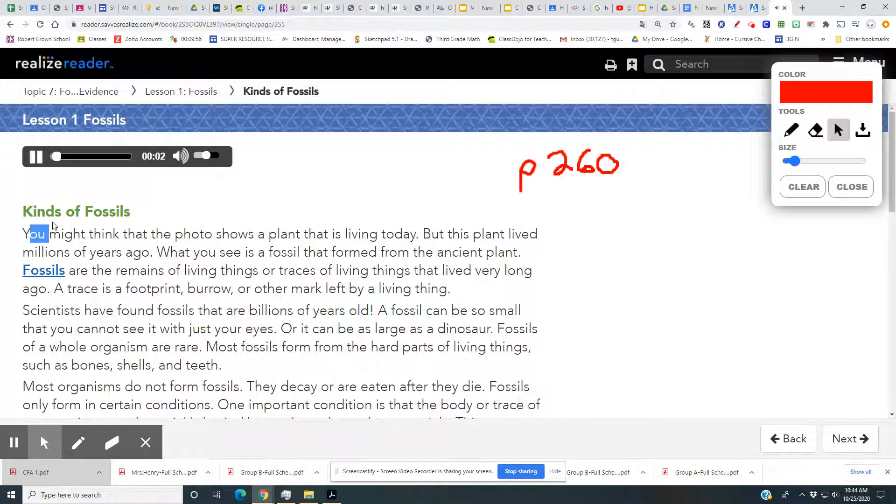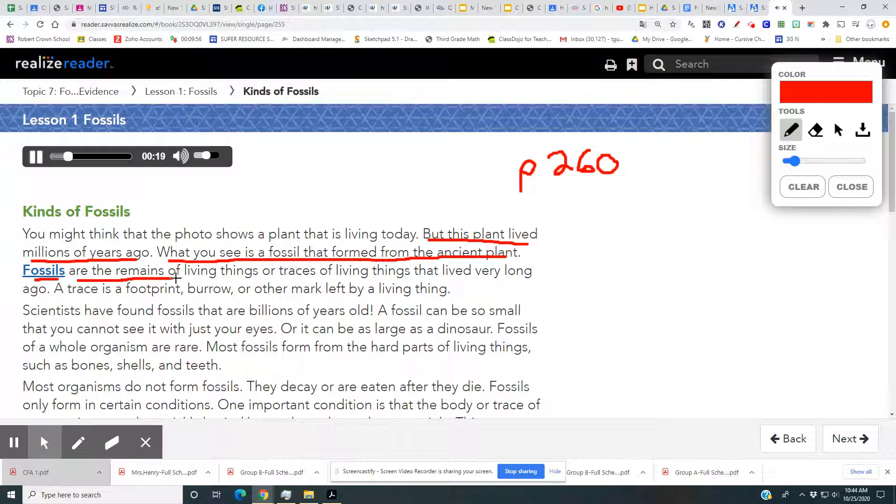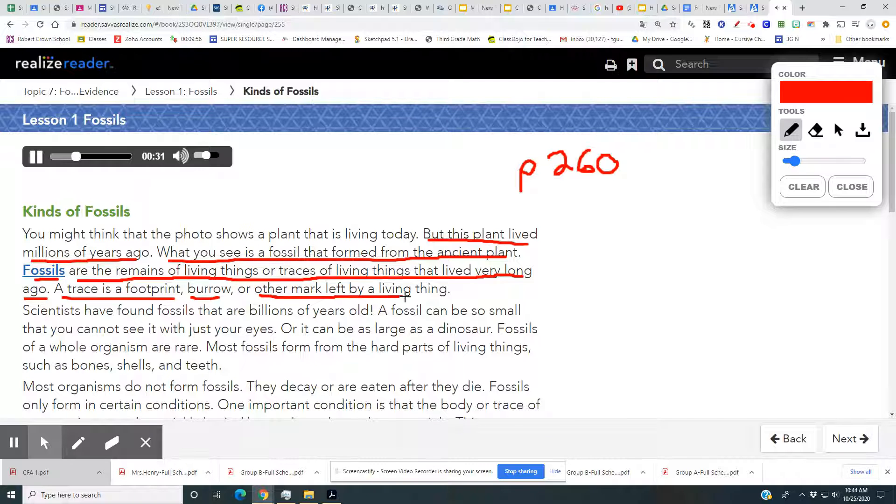Kinds of fossils. You might think that the photo shows a plant that is living today, but this plant lived millions of years ago. What you see is a fossil that formed from the ancient plant. Fossils are the remains of living things or traces of living things that lived very long ago. A trace is a footprint, burrow, or other mark left by a living thing.